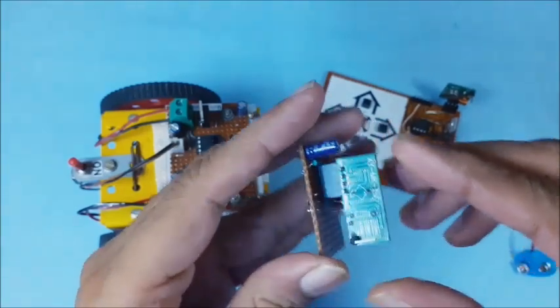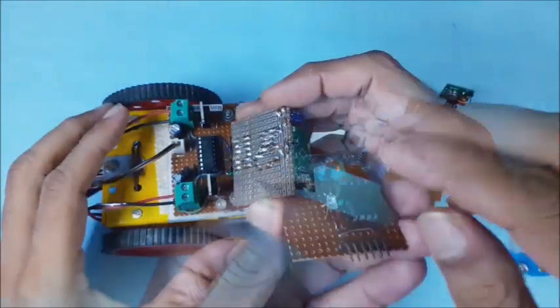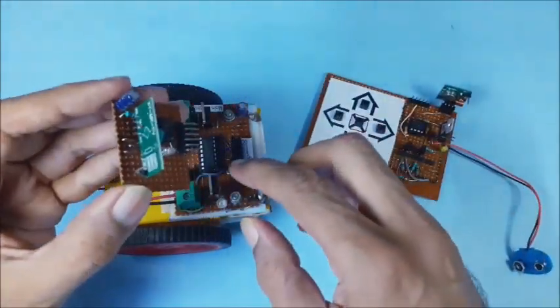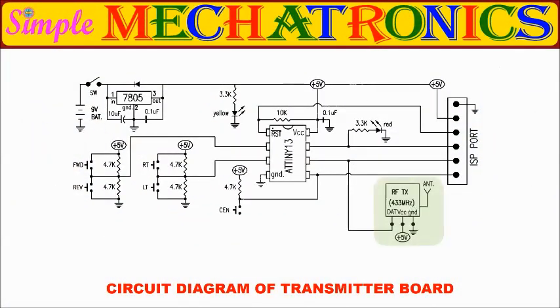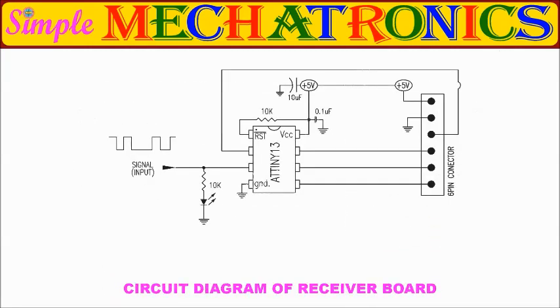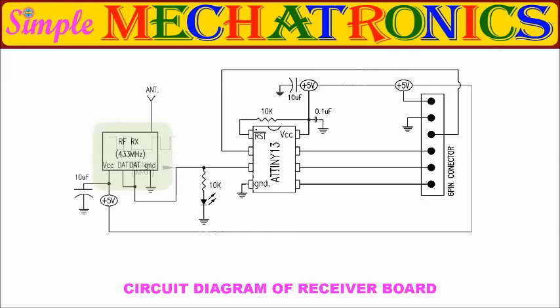Then, again insert the receiver board on the base frame. Now, RF modules are used as wireless connection between the transmitter board and the receiver board, as shown in the circuit diagrams here.